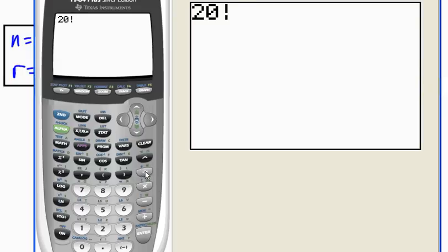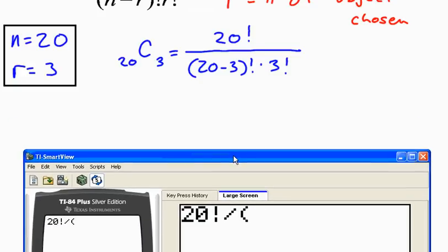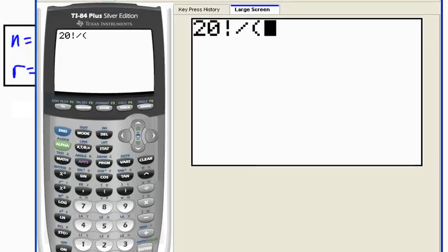20 factorial, divided by, and in parentheses, what do I have? 20 minus 3, that's 17. So let's go divided by 17 factorial times 3 factorial.